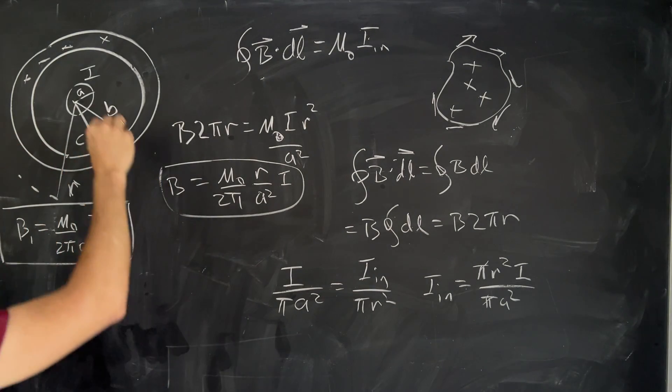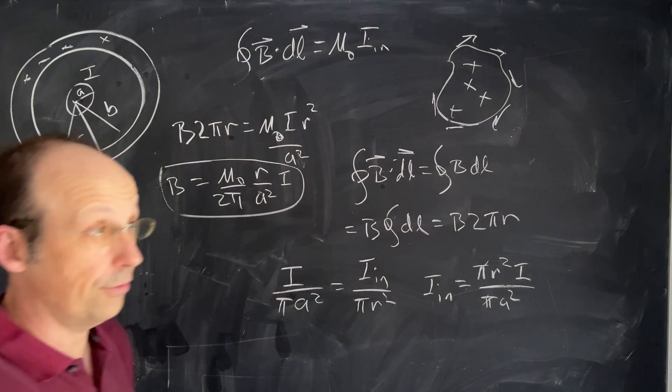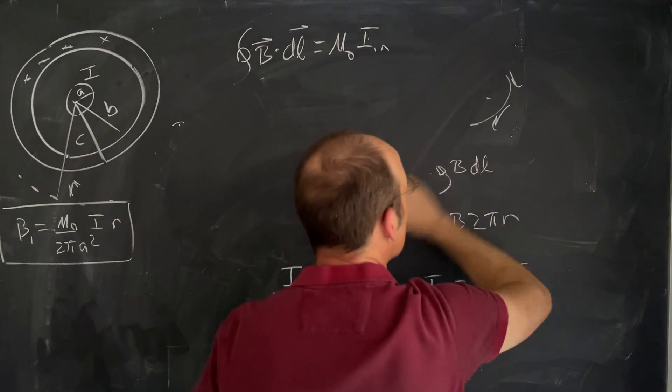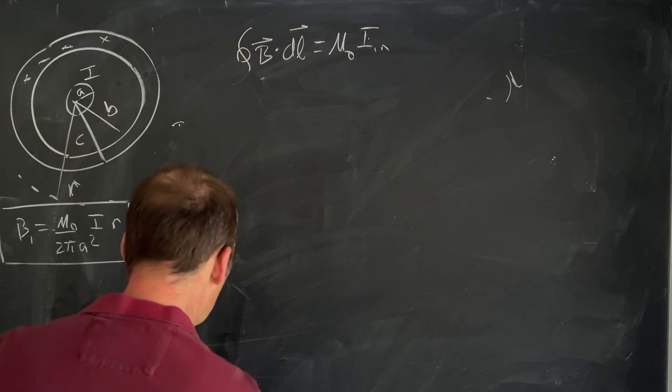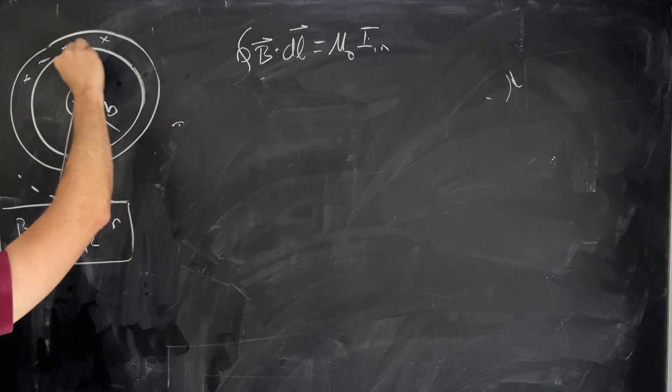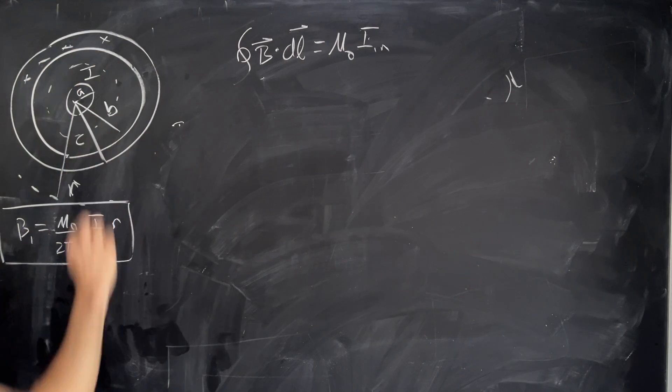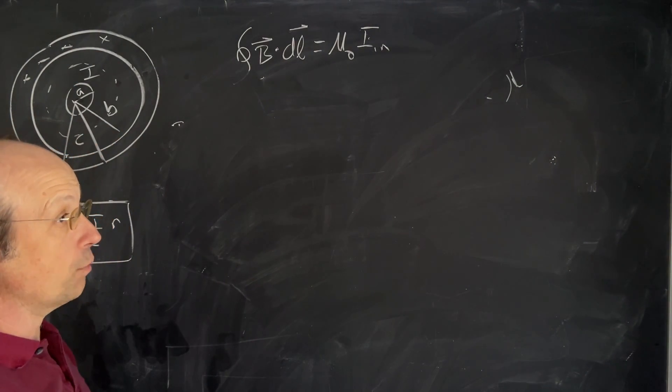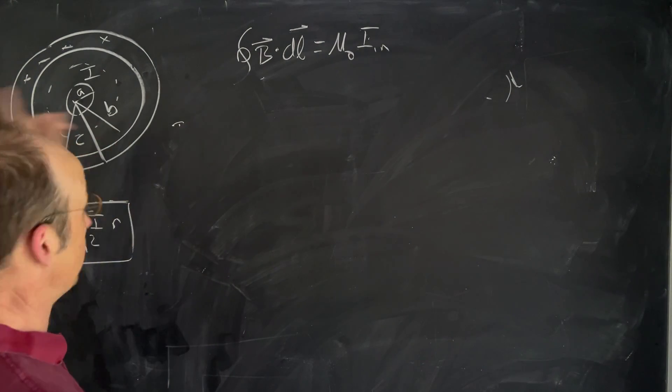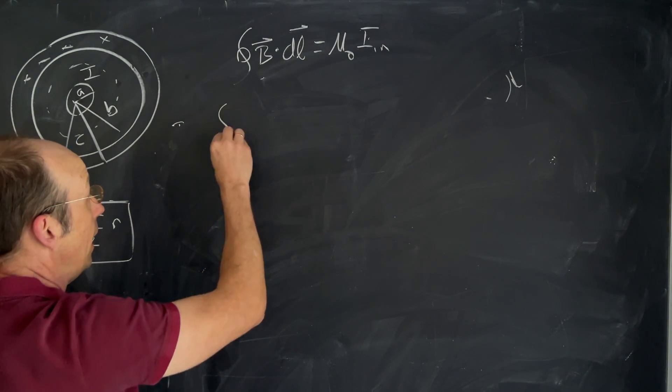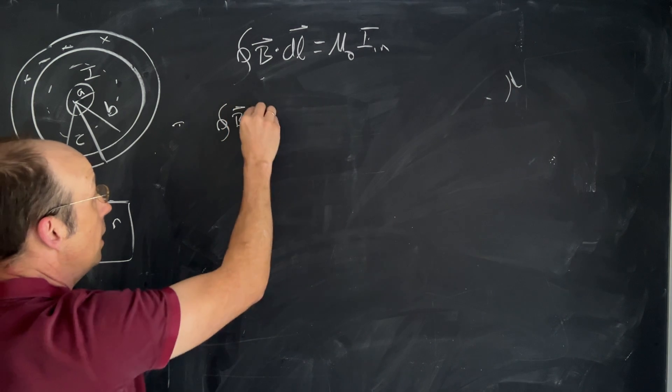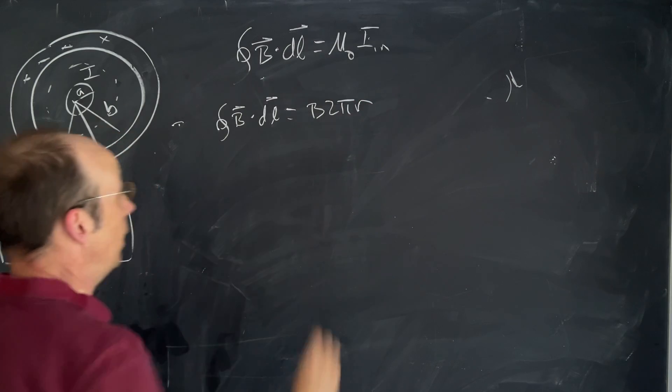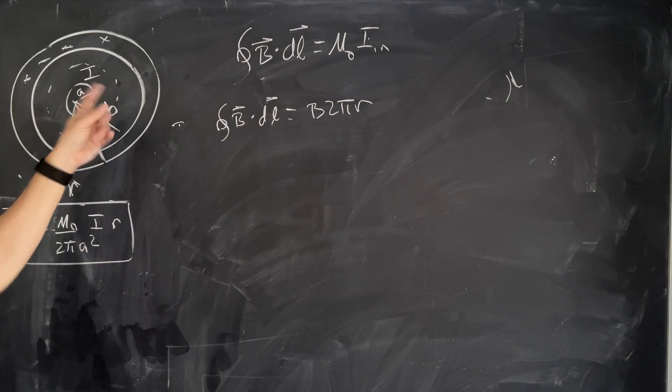Now let's go to region 2 inside of here. That one's actually pretty easy. In region 2, I'm going to again pick a circular path. I'm going to again assume that the magnetic field doesn't change with distance. I'm going to assume that it makes a direction that's in the same direction. So again, I'm going to get B dot dL is B times 2πR. Now I have an R that's greater than a and that's fine.